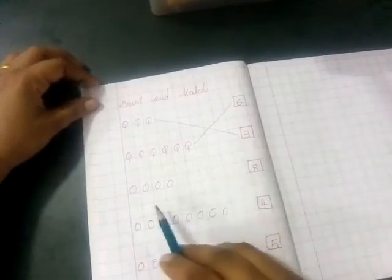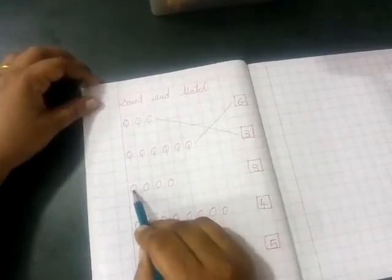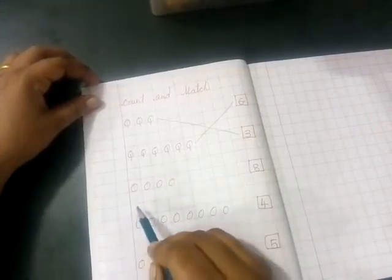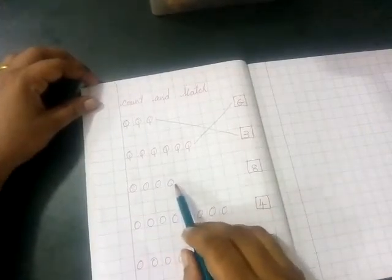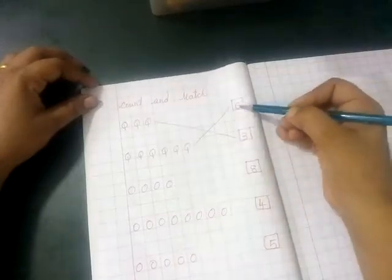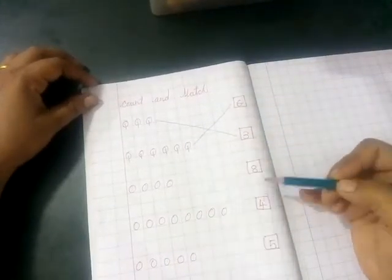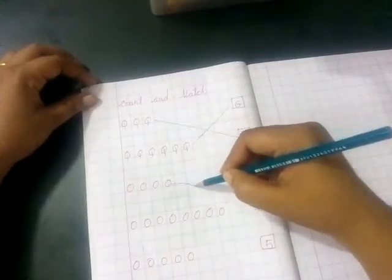Okay. Now, let's count this one. 1, 2, 3, 4. How many balls are here? There are 4 balls. Where is number 4? Yes, I got it. So, let's match.